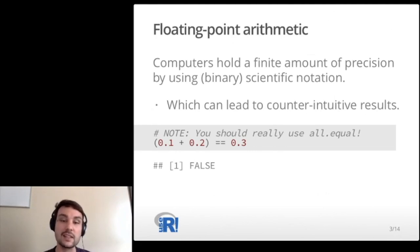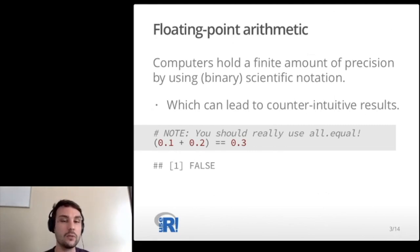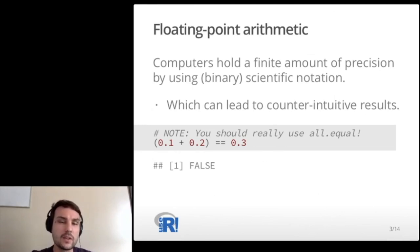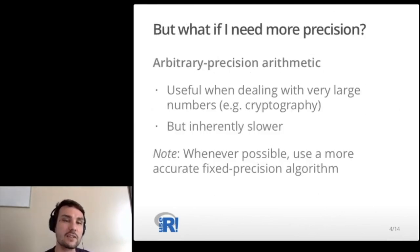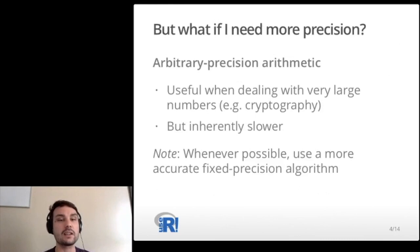This is also why you should really use all.equal when testing for this sort of thing, because the function all.equal accounts for rounding errors and precision. Arbitrary precision is when you want to or need more precision than what floating point arithmetic allows.